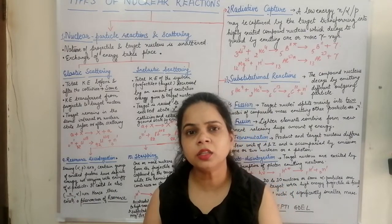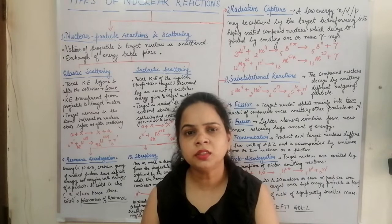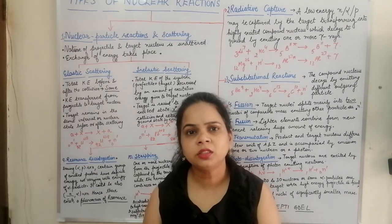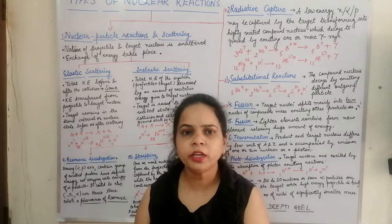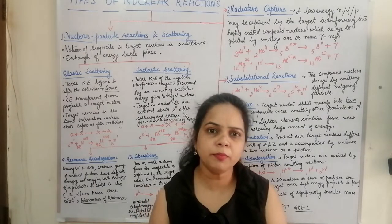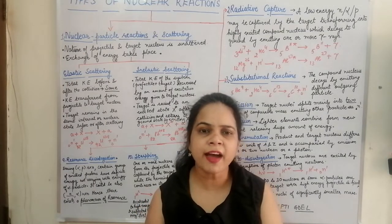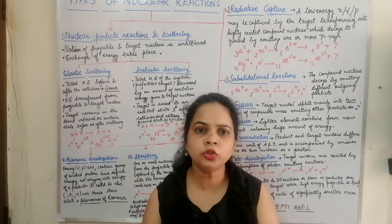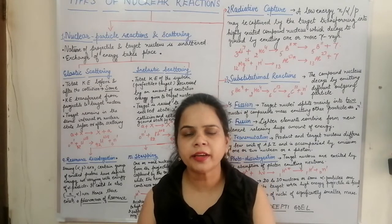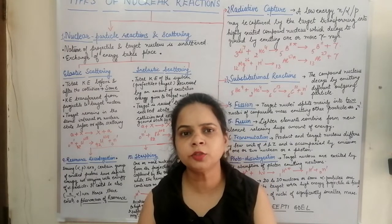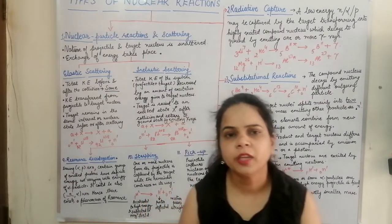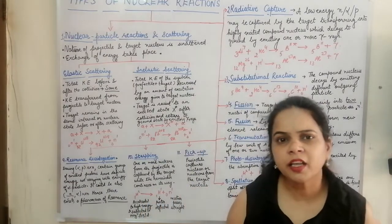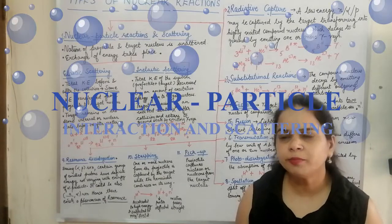Other factors include what charge is carried on the incident particle, what is the nature of the incident particle — whether it is a photon, alpha particle, or beta particle. All these factors contribute to the types of nuclear reaction, and also the products formed in the nuclear reaction determine its type. Let us study what the various types could be.